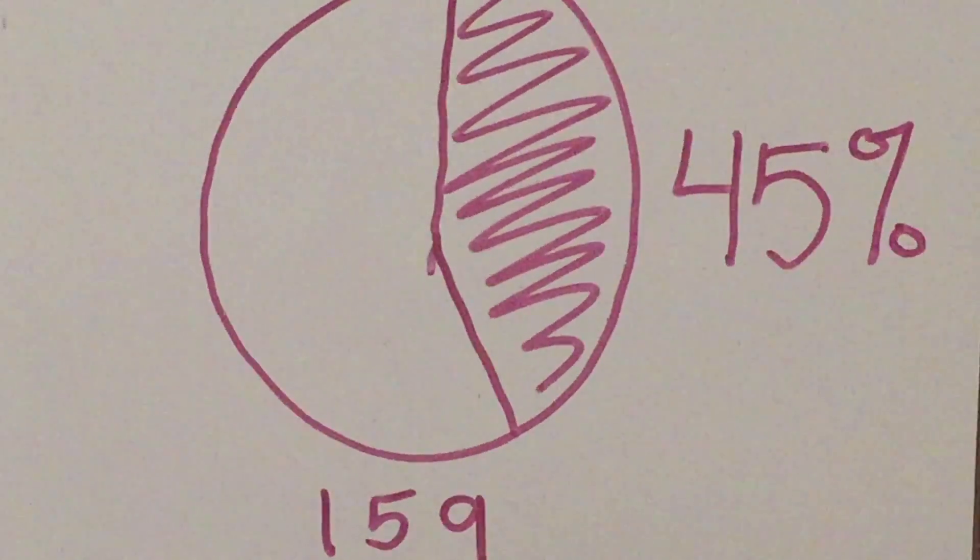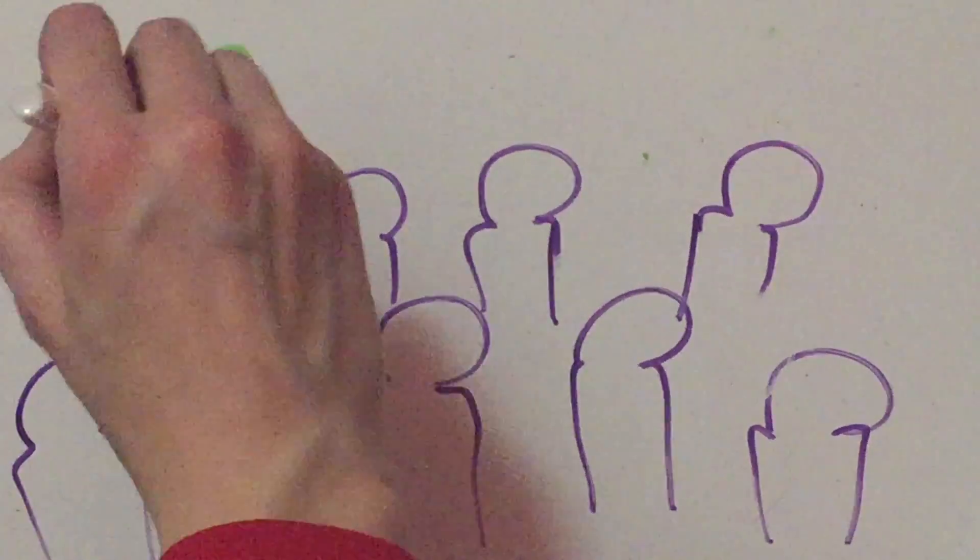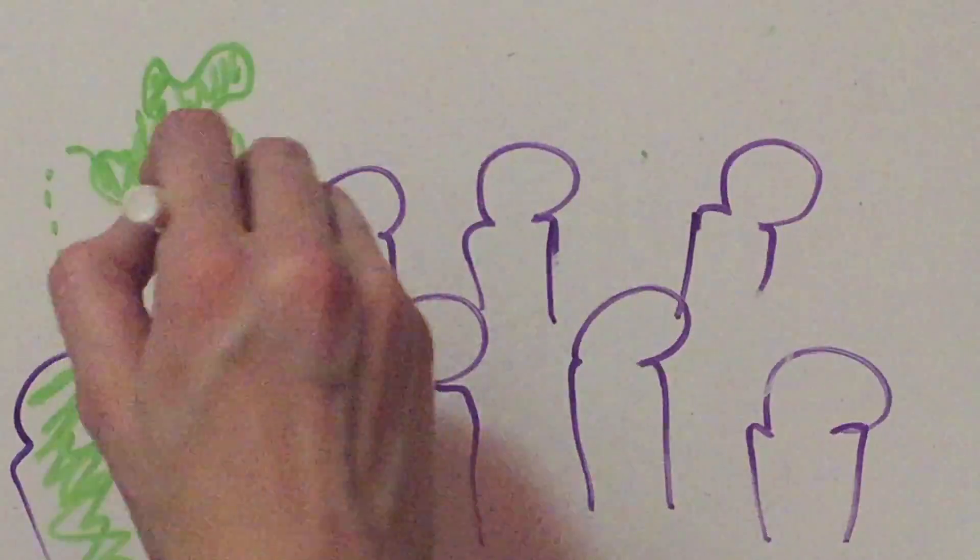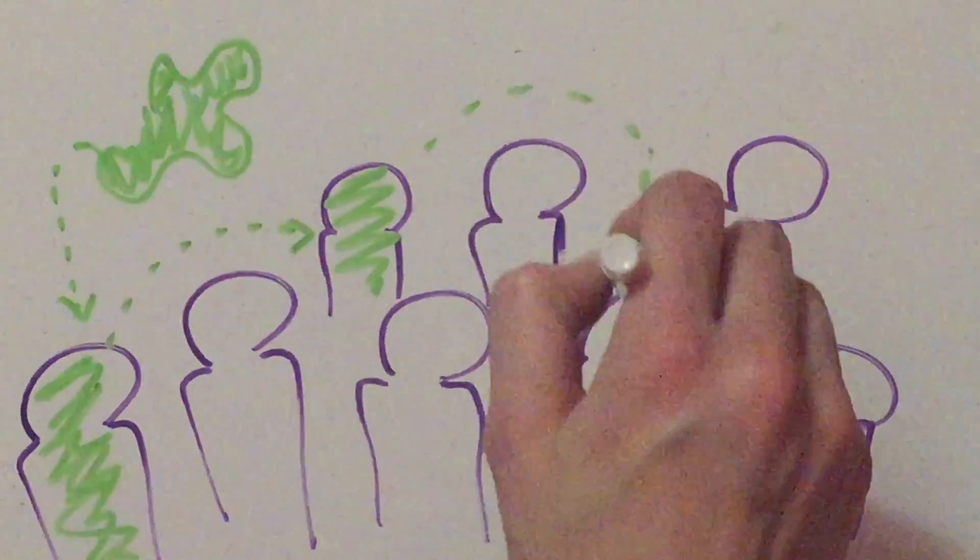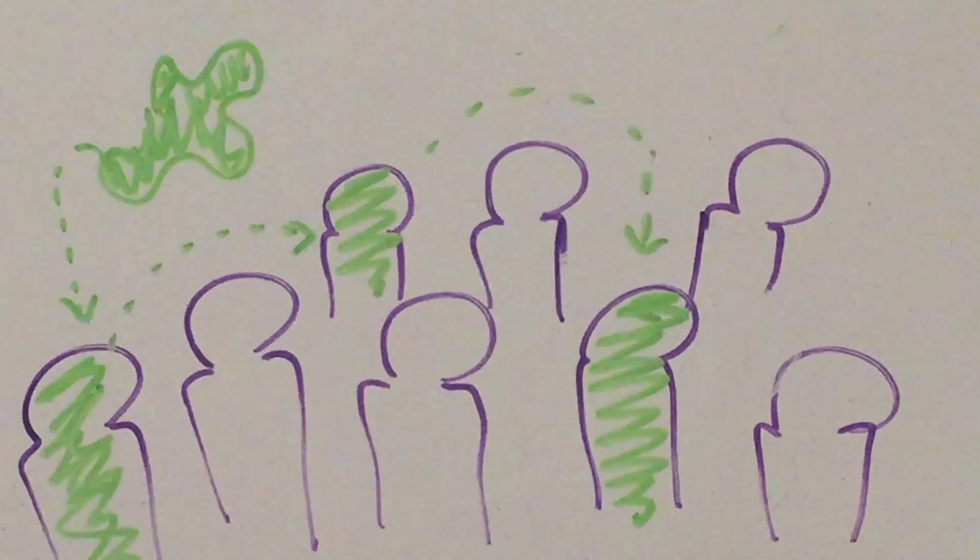You see, vaccination is very important. It creates what we call herd immunity. If a majority of a population is vaccinated, then those few who aren't will be more protected from the disease. But the more people who remain unvaccinated, the more easily disease can spread. This is especially dangerous for infants and the elderly who are more susceptible to disease.